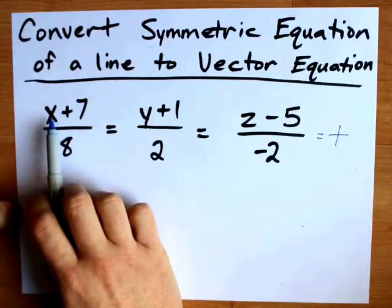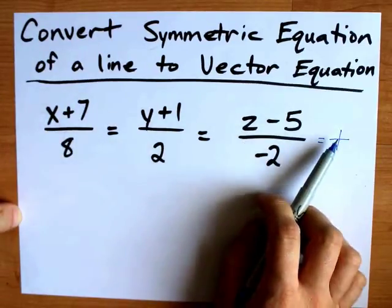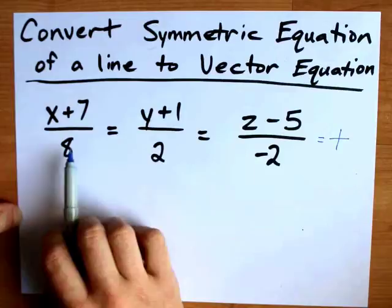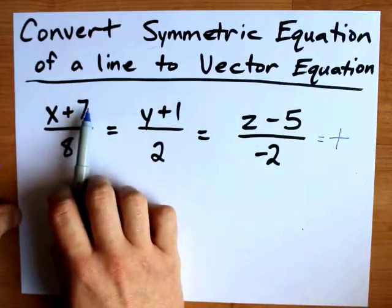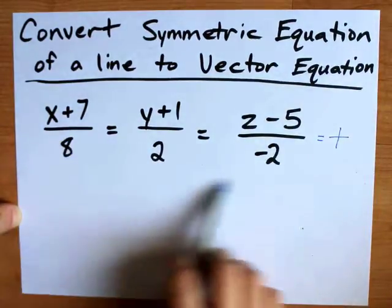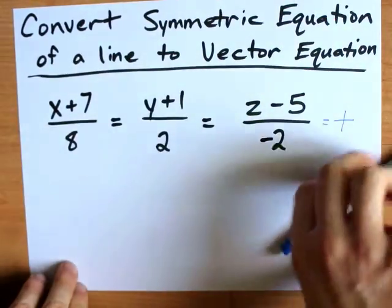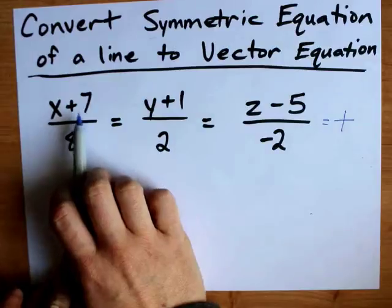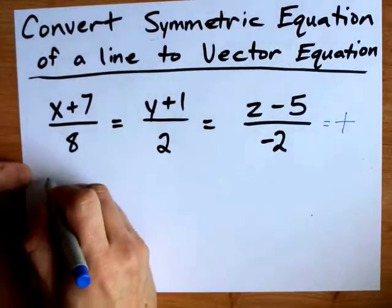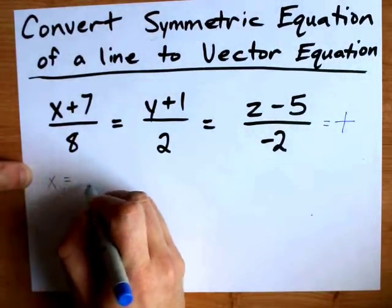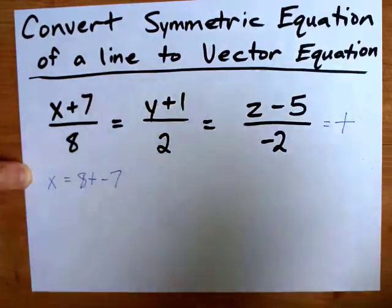Now I'm going to solve for x in relation to t. x plus 7 over 8 equals t. So x plus 7 equals 8t. I'm multiplying both sides of this equation by 8. Then I get rid of the 7 by subtracting on both sides. So I end up with x equals 8t minus 7.